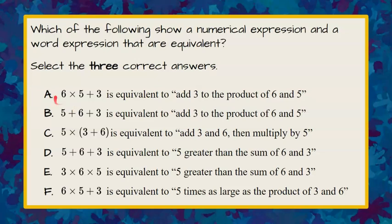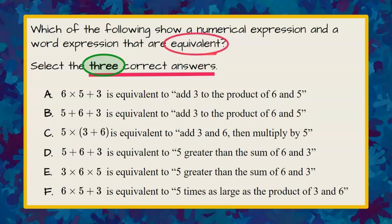Welcome back. We need to pick three of these six answers to be correct — half of them are correct. What we're doing is looking for an equivalent, meaning equal, numerical expression. We have a numerical expression in all six answer choices and we're asked whether it is equivalent to the word expression that follows. Let's go through each answer choice and figure out which three are correct.